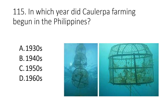Question 115. In which year did Caulerpa farming begin in the Philippines? A. 1930s B. 1940s C. 1950s D. 1960s. The answer is C. 1950s.